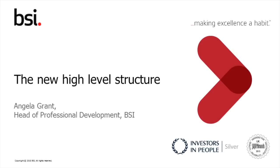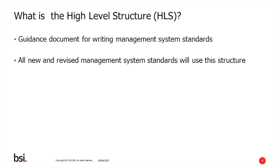There are now many management system standards designed to help a business function more effectively, such as ISO 9001, ISO 14001, and OSAS 18001. There are standards for anti-bribery and collaborative relationships, to name but a few. Many of these standards are written in different formats and structures, which makes it very difficult for organisations to integrate these standards together. So the ISO committee thought it would be a good idea to create a standard for writing management system standards, called Annex SL, also referred to as a high-level structure.